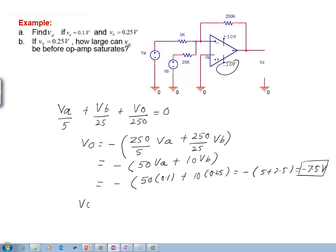Again, we go to the output equation here. This is going to be minus 50 times V A and then minus 10 times V B.